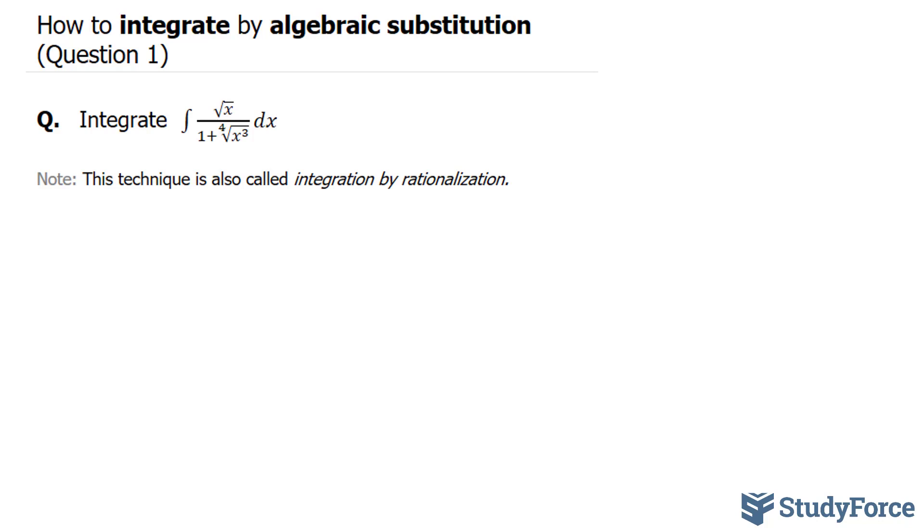The first thing that I want to do to integrate this function is change all radicals into exponential form. In other words, change the square root of x into x to the power of half, and similarly, the fourth root of x to the power of 3 into x to the power of 3 over 4. Let's go ahead and do that. We have the integral of x to the power of half over 1 plus x to the power of 3 over 4 dx.